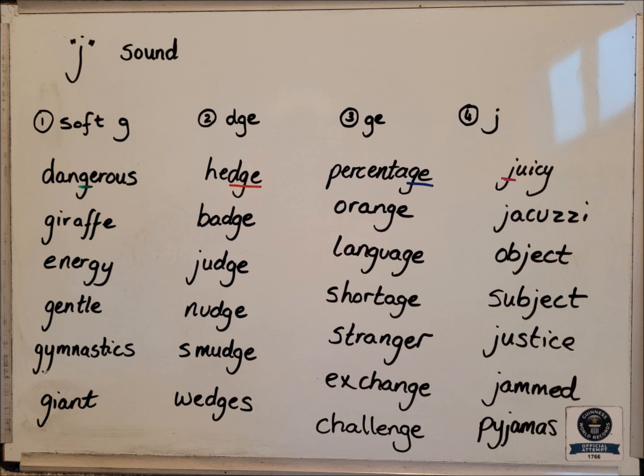For GE: percentage, orange, language, shortage, stranger, exchange and challenge. And for J on its own: juicy, jacuzzi, object, subject, justice, jammed and pyjamas. Those are my examples — yours might be slightly different, but do feel free to add any of mine into your word list.